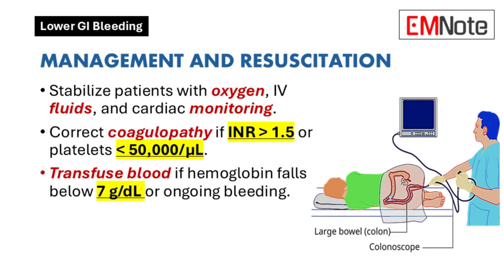Patients with active or unstable bleeding require immediate resuscitation. This includes oxygen supplementation for hypoxic individuals, cardiac monitoring, and large-bore intravenous access for fluid resuscitation with crystalloids. Coagulopathy correction is necessary if the international normalized ratio exceeds 1.5 or platelet counts are below 50,000 per microliter. Blood transfusion decisions should consider ongoing bleeding, hemodynamic instability, and hemoglobin levels, with a threshold of 7 grams per deciliter in most patients and lower thresholds for elderly individuals or those with comorbidities.